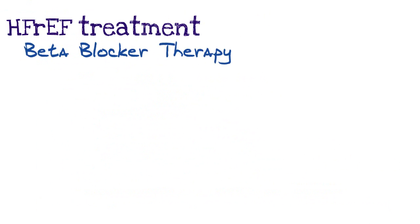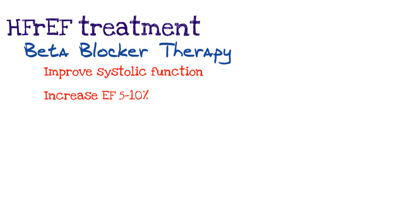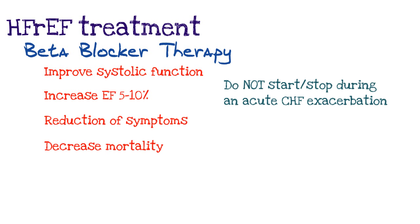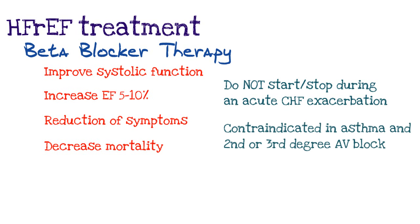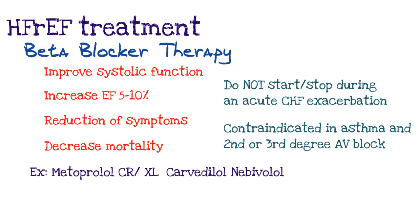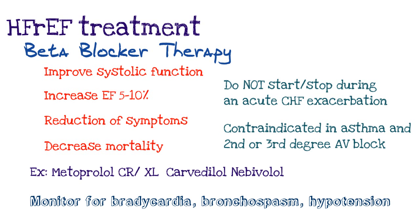Let's talk about beta blocker therapy. Beta blockers have several important benefits for patients with reduced ejection fraction heart failure: they improve systolic function, increase the EF 5 to 10%, reduce the symptoms the patient experiences, and most importantly decrease mortality. Do not start or stop beta blocker therapy during an acute CHF exacerbation — if a patient is having an acute exacerbation and is already on beta blockers, keep it as long as blood pressure is okay, but don't start one during exacerbation. Beta blockers are contraindicated in asthma and second and third degree AV block. Examples include metoprolol CR/XL, carvedilol, and nebivolol. Monitor for bradycardia, bronchospasm, and hypotension.